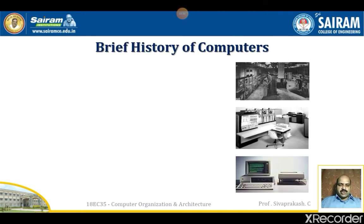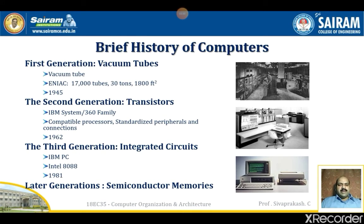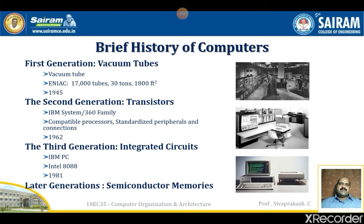Let us see about the brief history of computers. There are various generations. The first generation used vacuum tubes during 1945. Later in 1962, the second generation evolved in the form of transistors. The third generation in the 1980s entered integrated circuits — ICs — in the form of IBM PCs, Intel 8080, and such things. Nowadays in later generations, we make use of semiconductor memories called very large scale integration, VLSI, and CMOS technology. Presently we have processors like i3, i5, i7, growing in the field of computer generations.